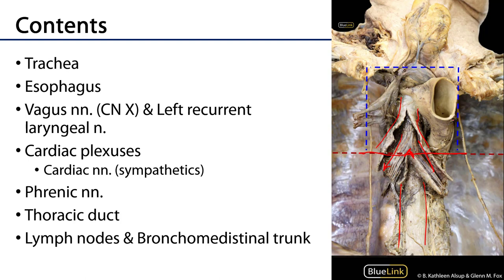We can see the left vagus nerve giving off the left recurrent laryngeal nerve. The right vagus nerve is in closer approximation there, a little out of view, but it will be wrapping around as well. We can also see the phrenic nerves — one on each side of the borders of the superior mediastinum. Moving up in the tracheoesophageal groove and then crossing from left to right before ascending again is the thoracic duct of the lymphatic system.